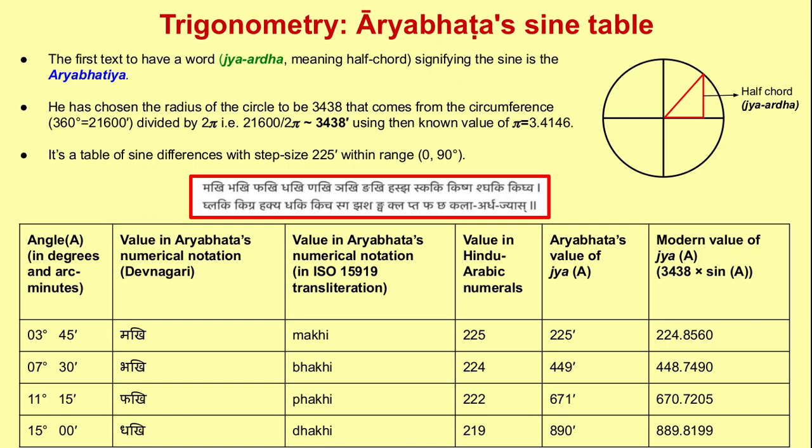Aryabhata's original sine table is given in the form of poetry. Its values are tabulated in a table where the first column contains the values of angles, and the next column contains these numbers in Hindu-Arabic numerals. Aryabhata's numbers are the first differences in the values of sines. The corresponding values of sine — or more precisely of Jya — can be obtained by summing up the differences. For assessing the accuracy of Aryabhata's computation, the modern values of sines are given in the last column of the table.